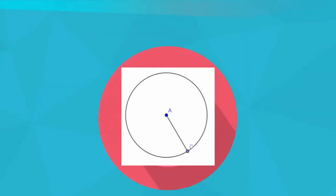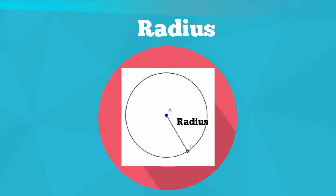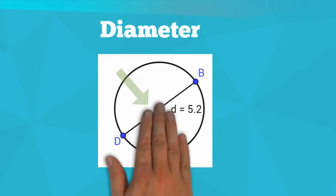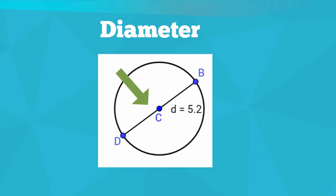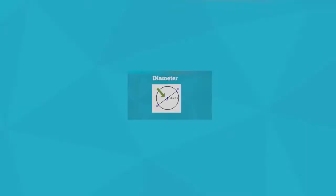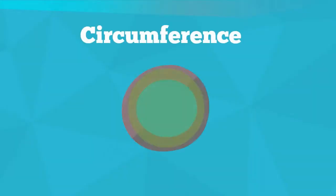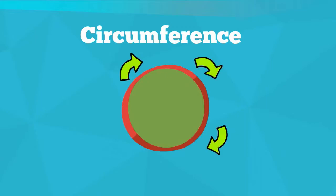The radius is the distance from the center of the circle to any of the points on the circle. The diameter is the distance across the circle. Circumference is the distance around the circle.